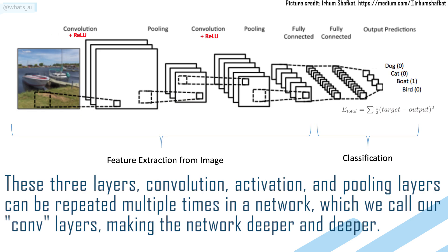These three layers - convolution, activation, and pooling layers - can be repeated multiple times in a network, which we call our ConvLayers, making the network deeper and deeper.